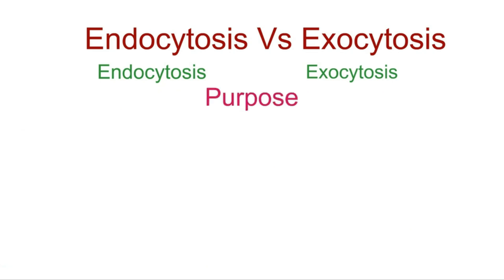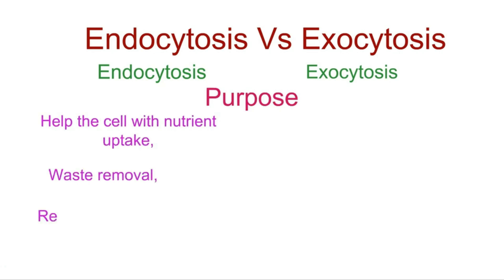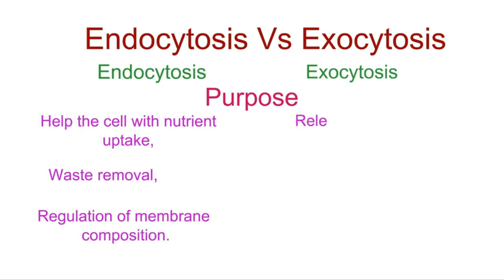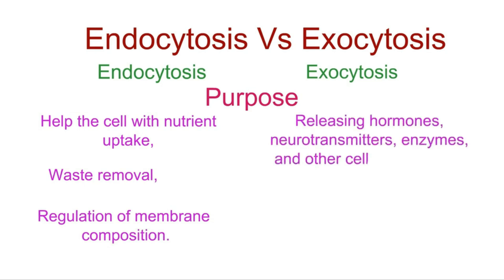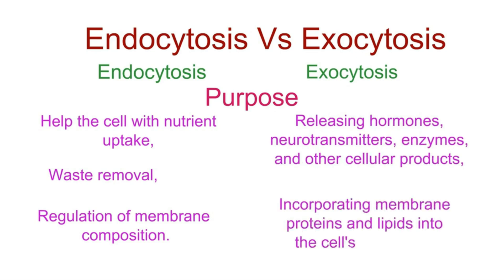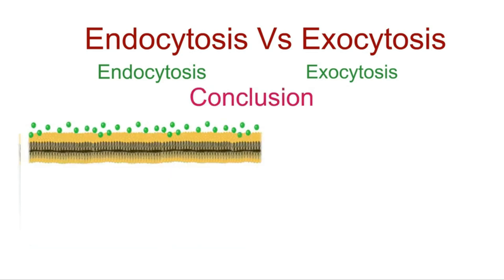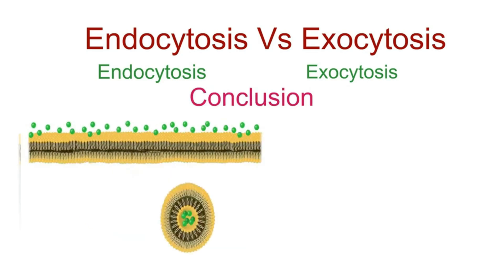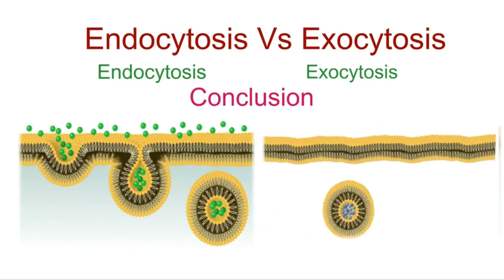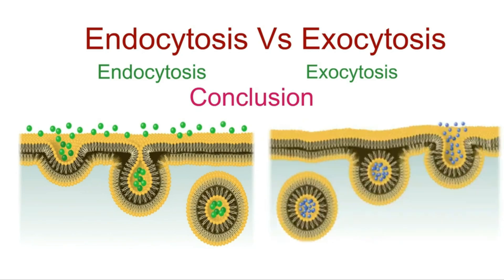The primary purpose of endocytosis is to help the cell with nutrient uptake, waste removal, and regulation of membrane composition. Exocytosis serves various purposes including releasing hormones, neurotransmitters, enzymes, and other cellular products, as well as incorporating membrane proteins and lipids into the cell's outer layer. In a nutshell, endocytosis is the process of bringing substances into the cell, while exocytosis is all about expelling substances from the cell. Together, they play vital roles in maintaining the cell's environment, communication, and responses to external cues.